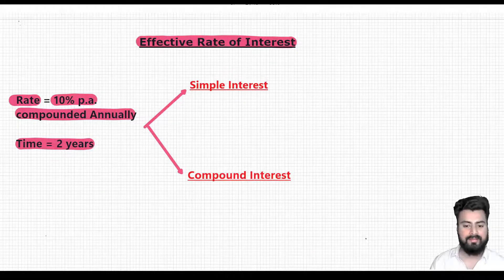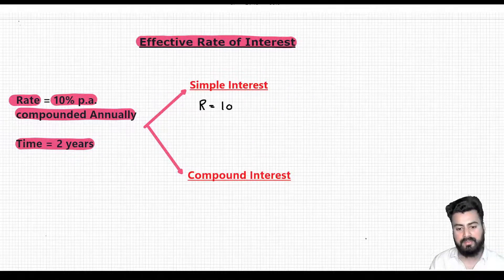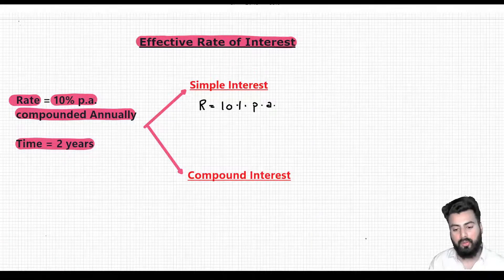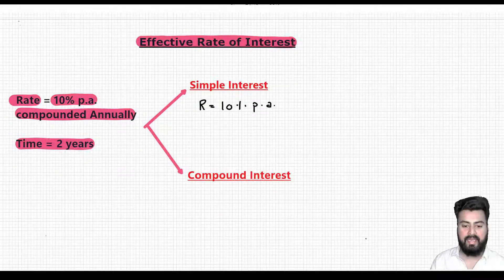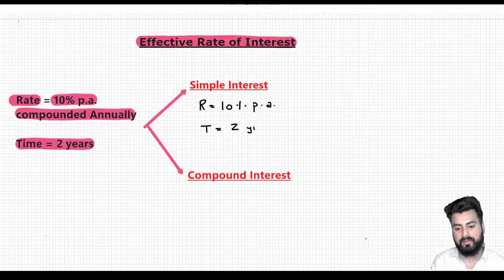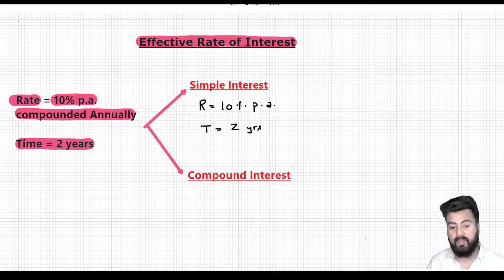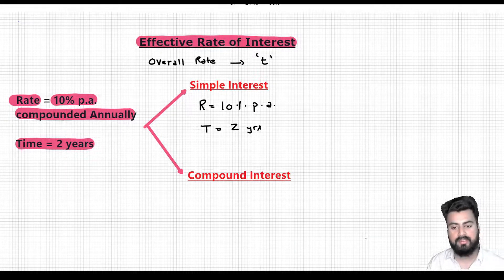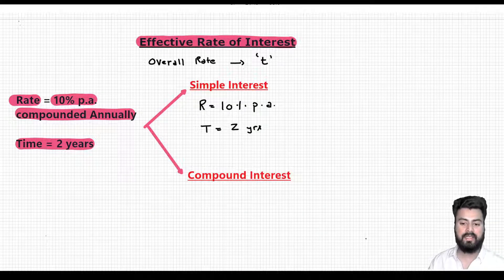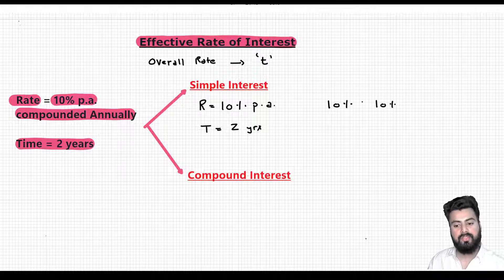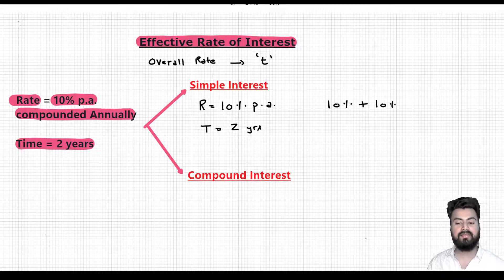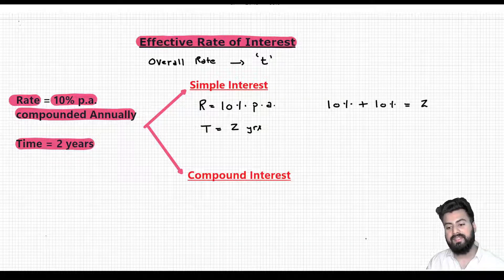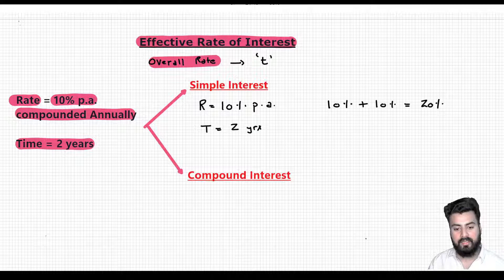First let's talk about simple interest. In simple interest, if the rate is 10% per annum — per annum means at the end of one year the rate applicable is 10% — and the time duration is 2 years. So in order to calculate effective rate of interest, which means overall rate for a given time duration, in simple interest you have to understand that simple interest is linear in nature. Linear means if you are getting 10% for 2 years, you simply add the two interest values. Since we are doing calculation for 2 years, I'm going to add 10% twice, and once you add them you get the effective rate of interest for 2 years — the overall rate for 2 years.